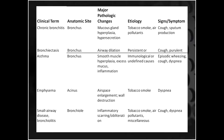The classification of obstructive diseases includes chronic bronchitis, bronchiectasis, asthma, emphysema, and small airway diseases like bronchiolitis. Anatomically, chronic bronchitis, bronchiectasis, and asthma happen in the bronchial region, while emphysema happens in the acinar or alveolar space. This is an important distinction.